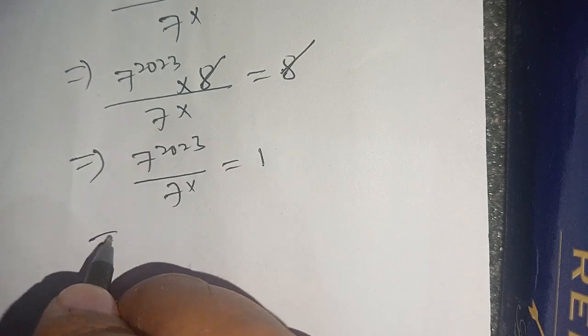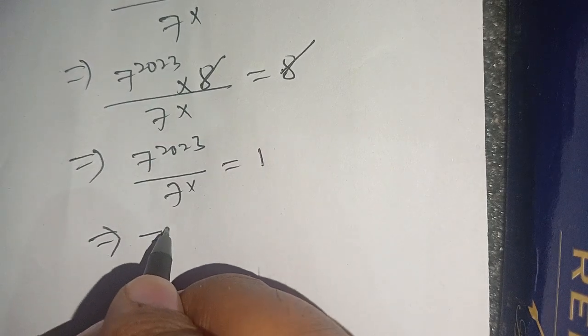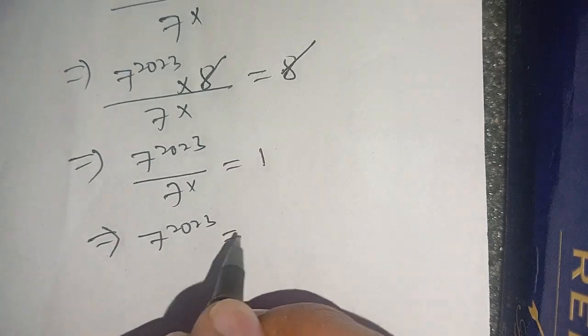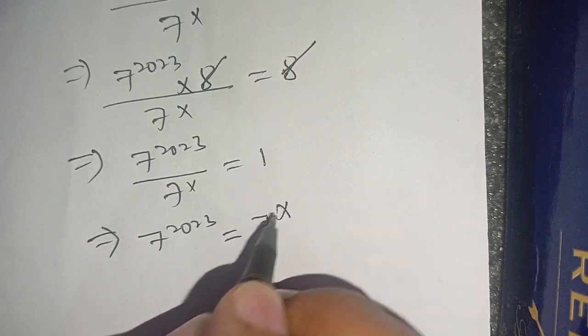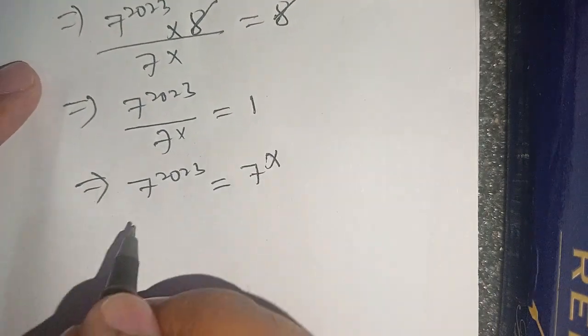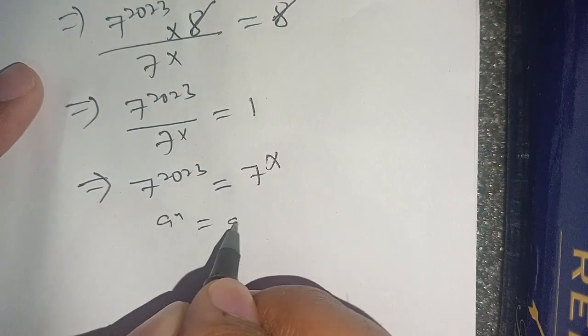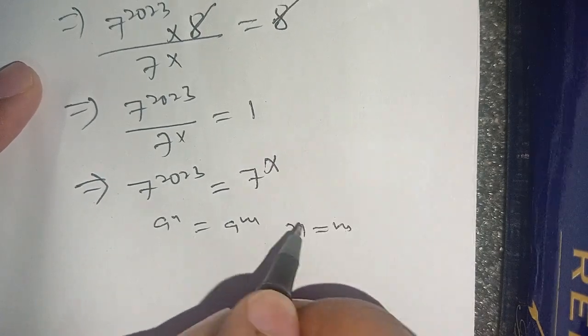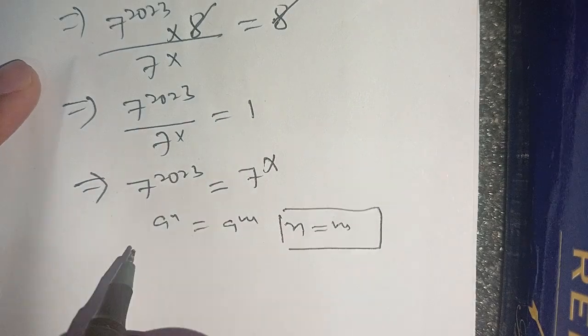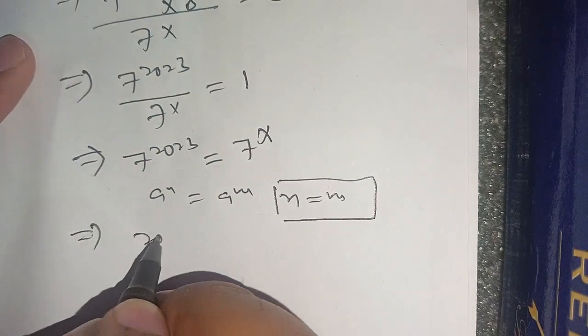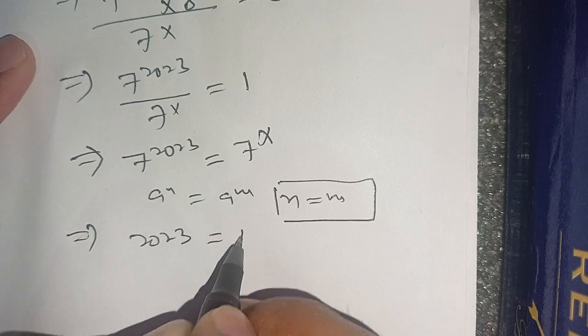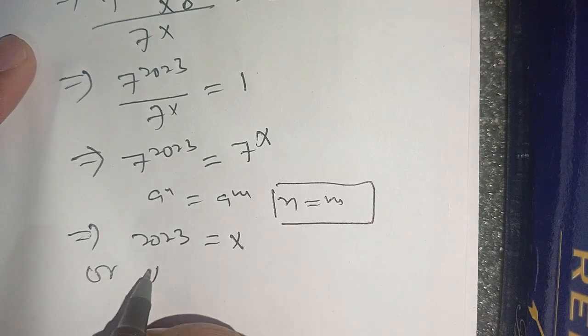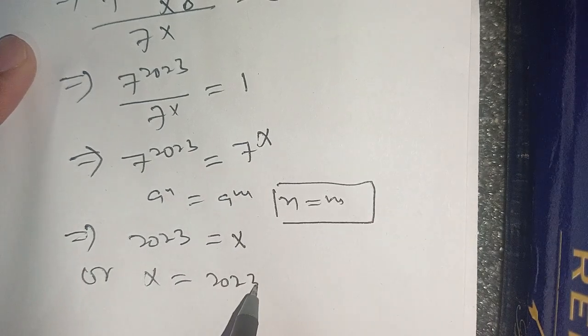Now we can write this equation as 7 power 2023 is equal to 7 power x. It is in the form of a power n is equal to a power m. We can compare its power, means that n is equal to m. Comparing its power, we get 2023 is equal to x, or x is equal to 2023.